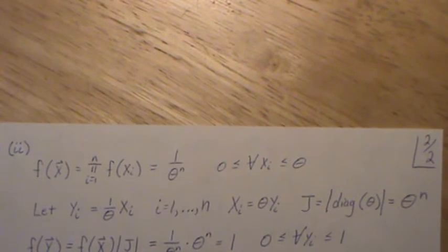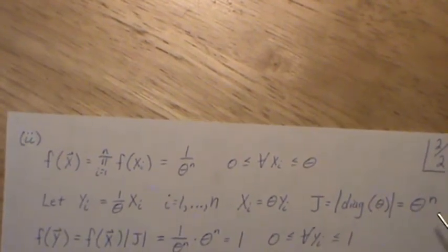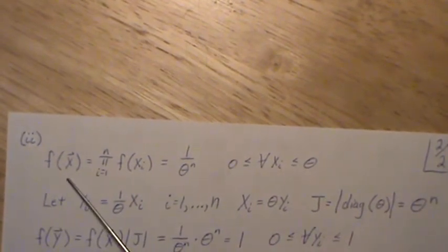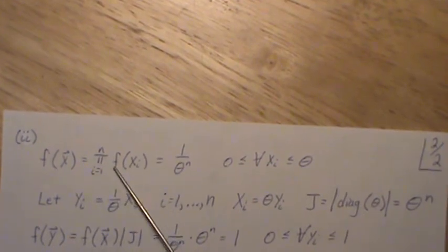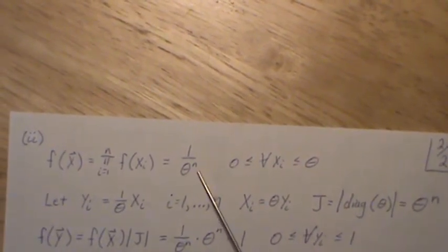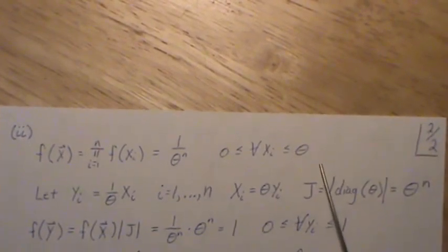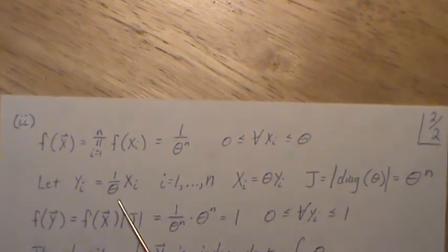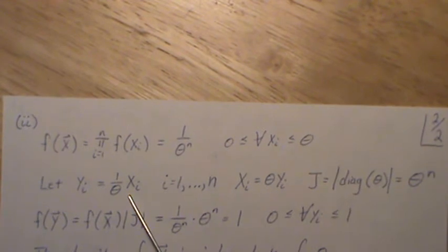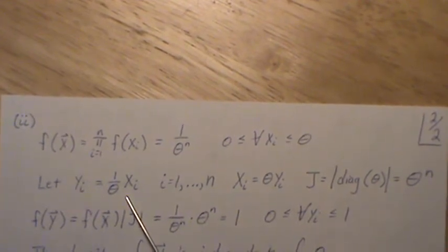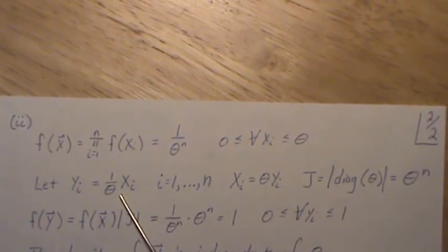Now, another approach, to show that those were ancillary, is this. So the joint distribution of the x's, which is the product of the xi's, which is 1 over theta to the n. This is for all xi, have to be between 0 and theta. So let's find the distribution of 1 over theta xi. Now, remember, if you knew that it was a part of the scale family of distributions, then this transformation becomes quite easy. But we're going to derive it.